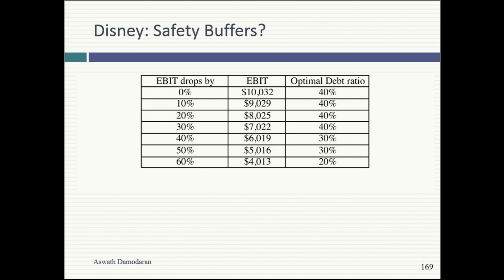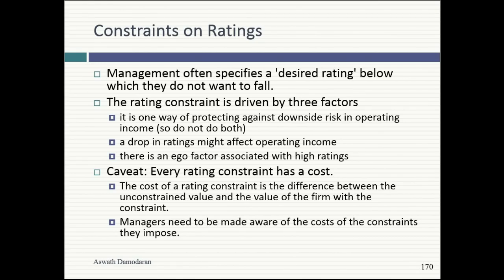There are two ways this process plays out. One is to change operating income and see what the optimal is. The other is the rating constraint. What if I told you Disney's rating at the optimal 40% was double-B — would you be willing to go to that 40% debt ratio? No, because you have a constraint, and for many US companies that constraint is at least investment grade, with some buffer — maybe you want A-minus rather than triple-D.